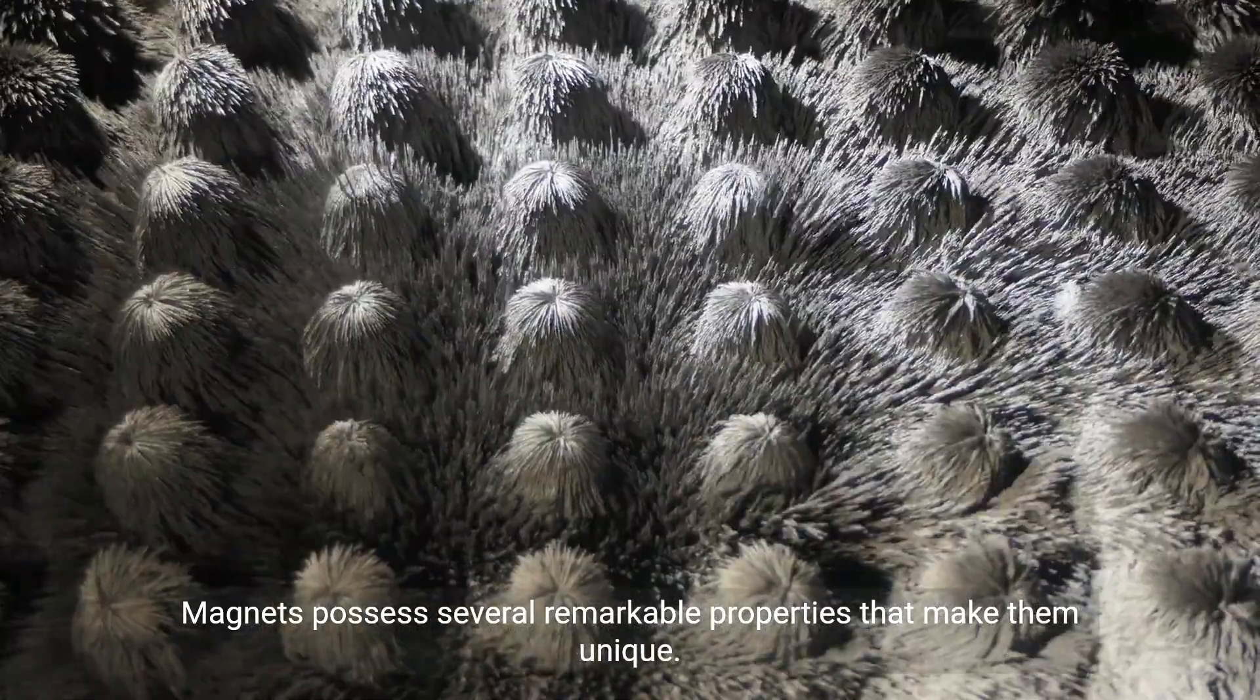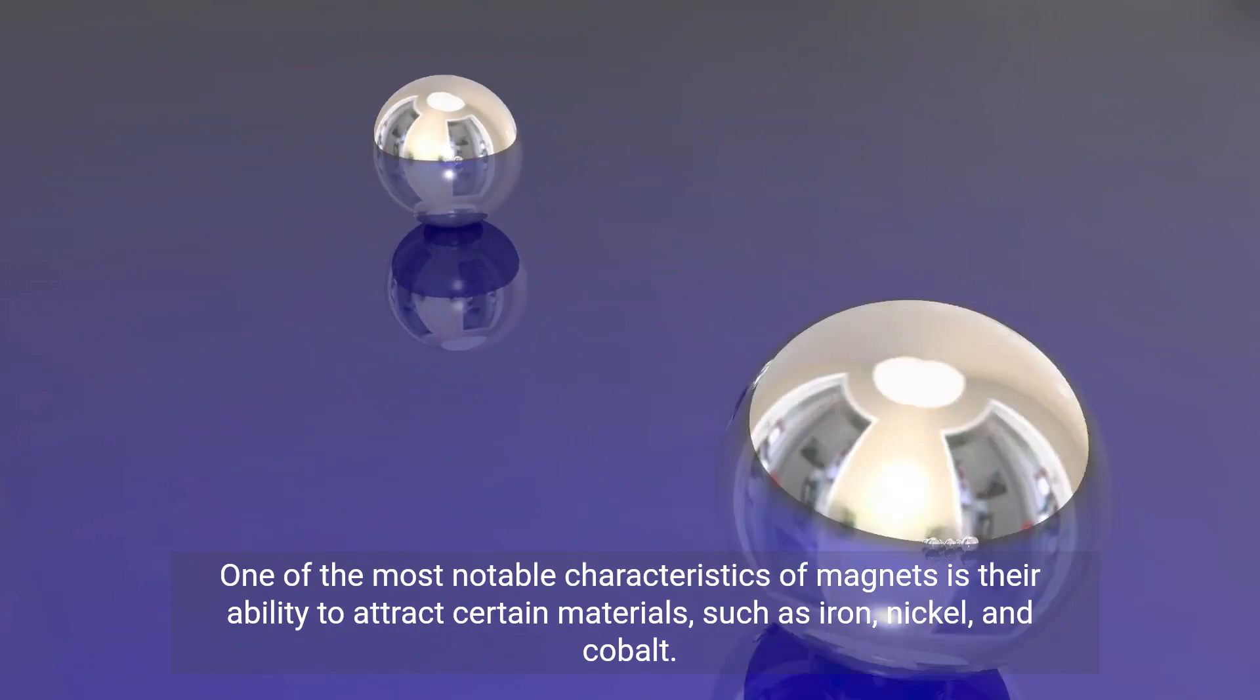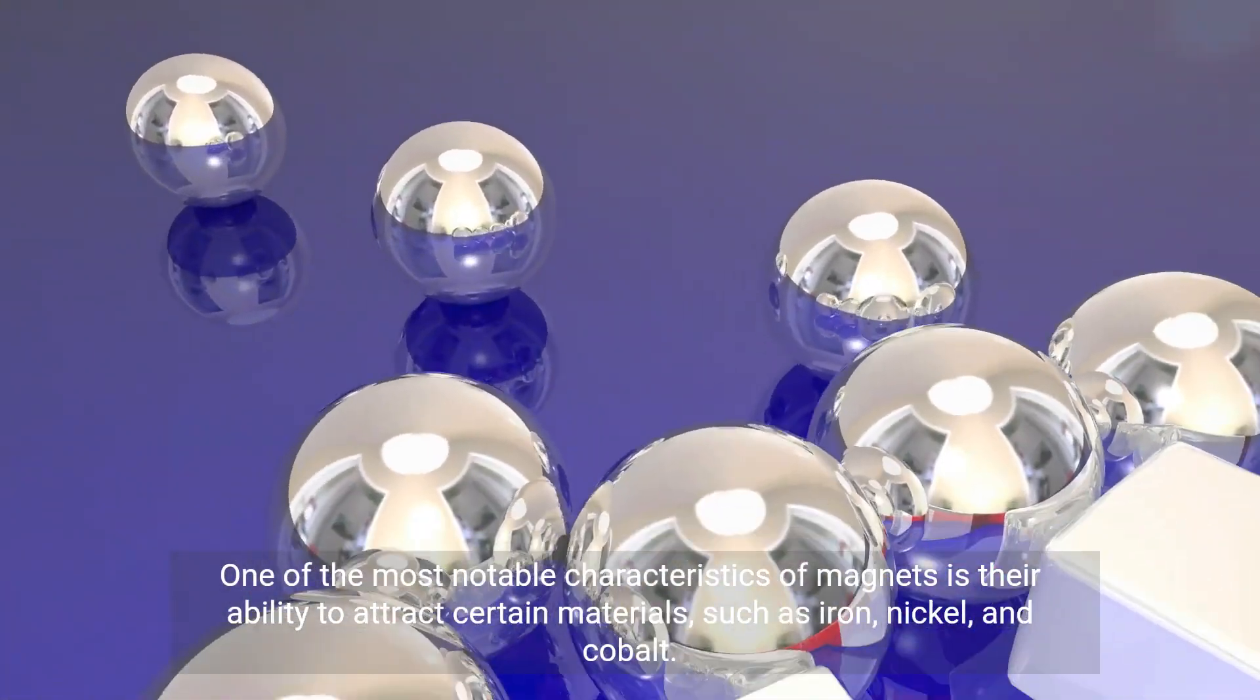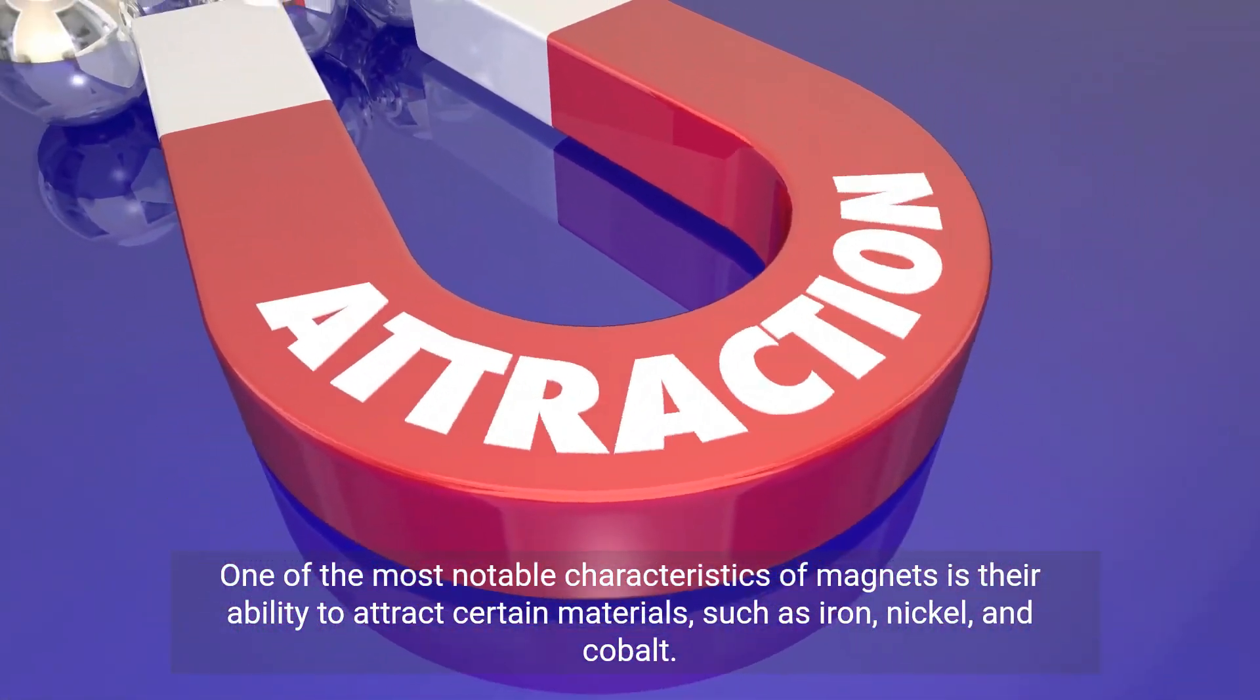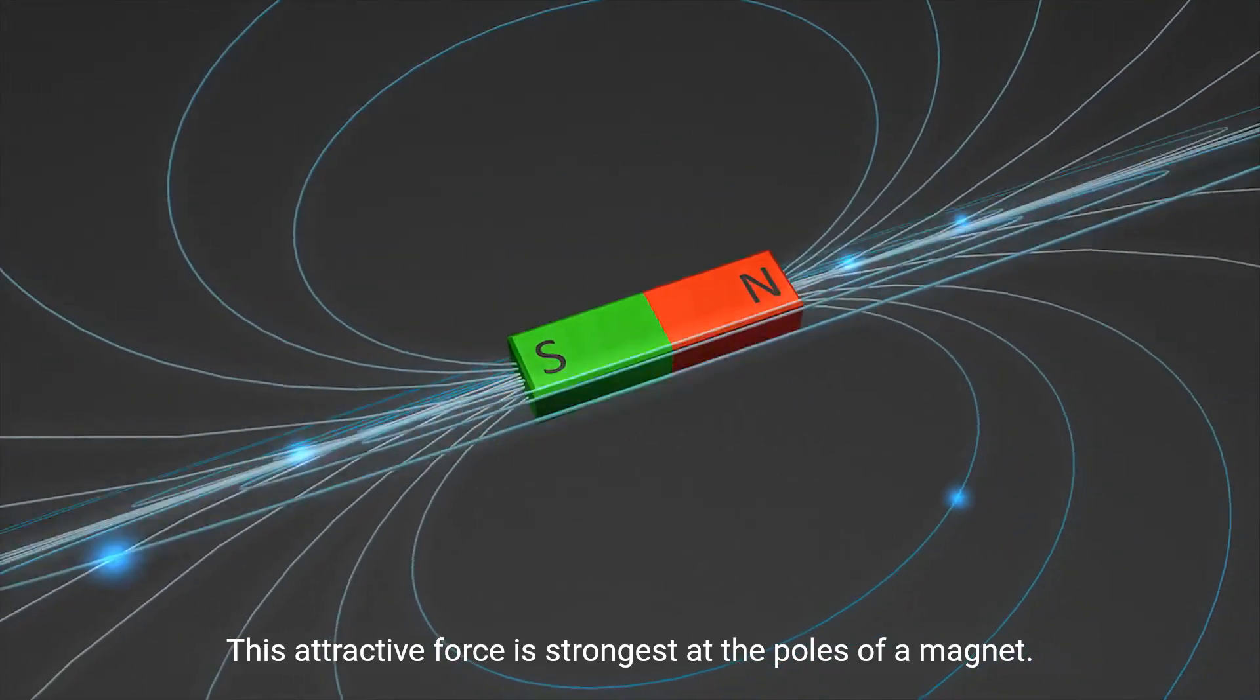Magnets possess several remarkable properties that make them unique. One of the most notable characteristics of magnets is their ability to attract certain materials such as iron, nickel, and cobalt. This attractive force is strongest at the poles of a magnet.